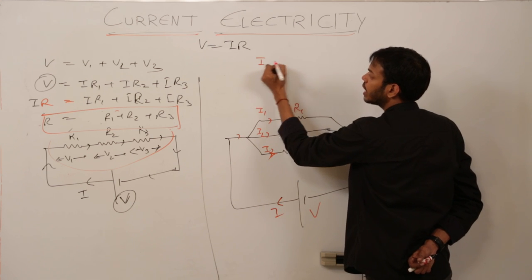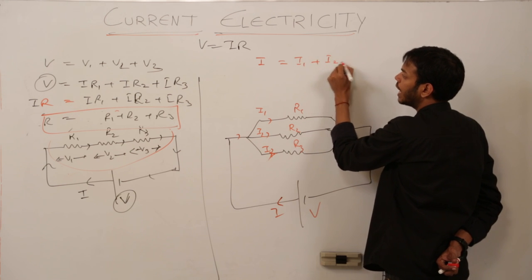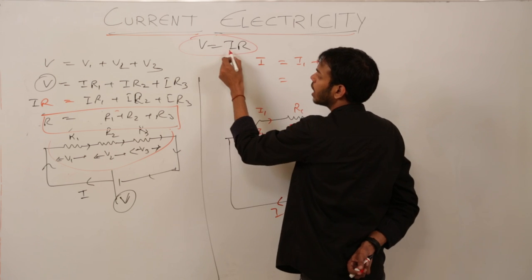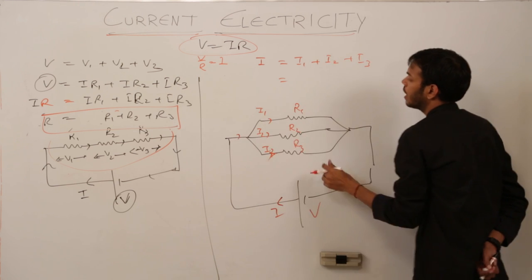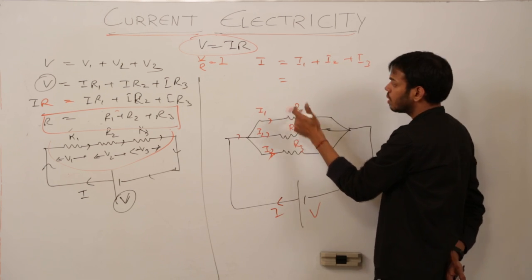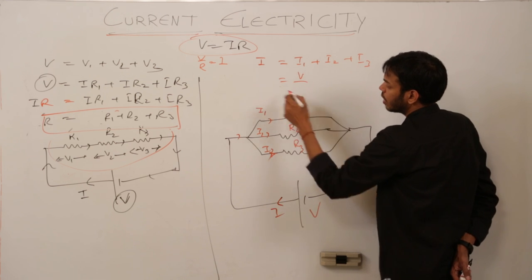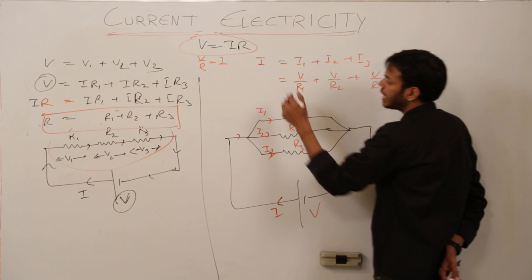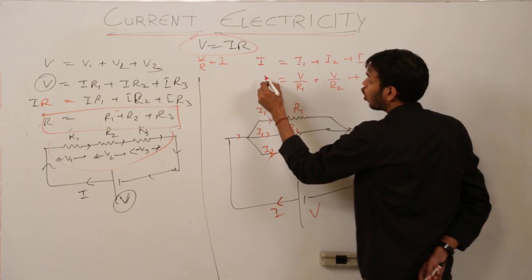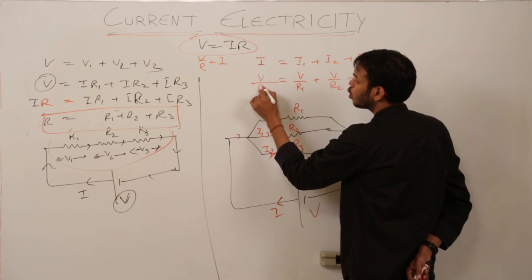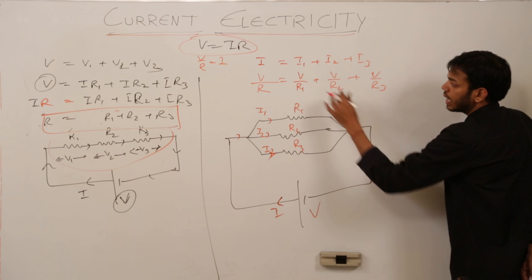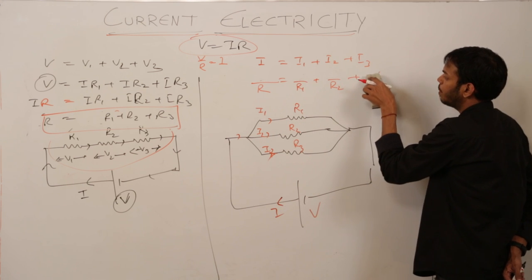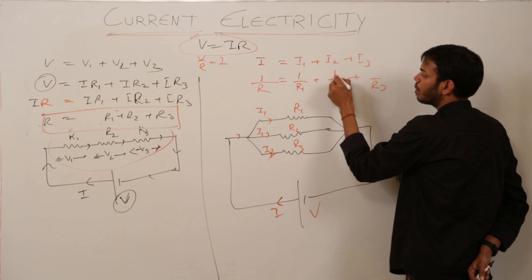Current is the rate of flow of charge. So starting from the current: I1 plus I2 plus I3. Using the formula I = V/R, the voltage given to R1 is the complete voltage V. So I1 = V/R1, I2 = V/R2, and I3 = V/R3. The total current I equals total voltage upon total resistance, so V/R = V/R1 + V/R2 + V/R3. Taking V common and cancelling, you get: 1/R = 1/R1 + 1/R2 + 1/R3.